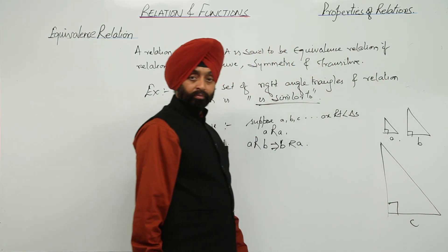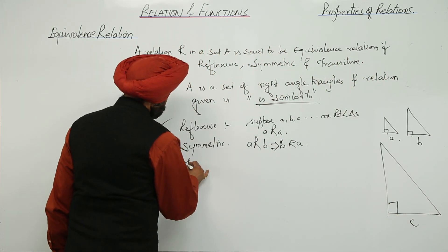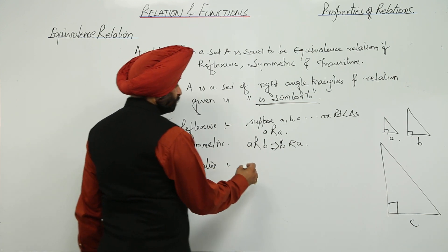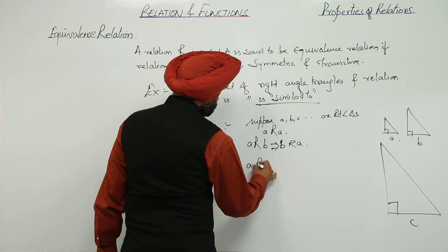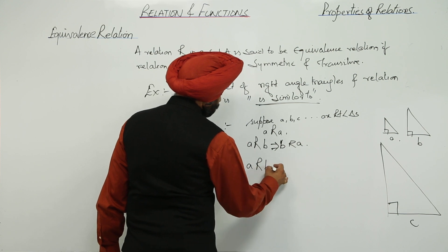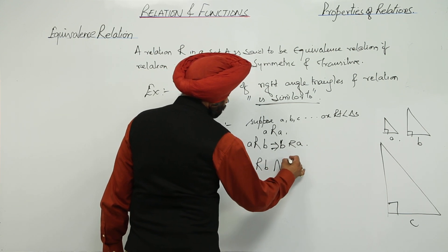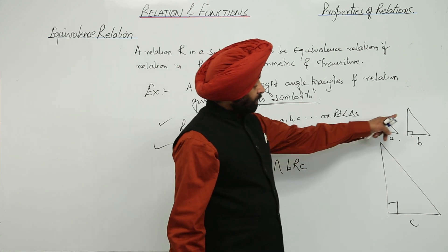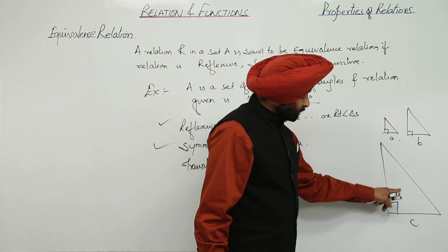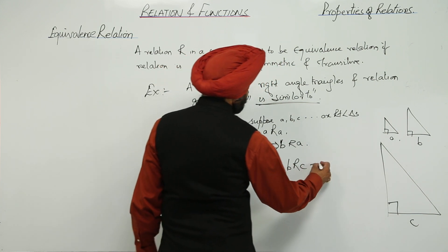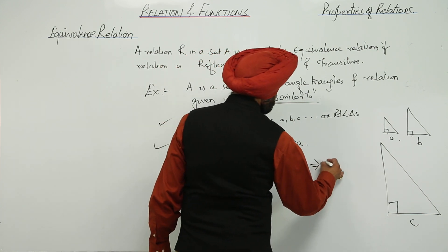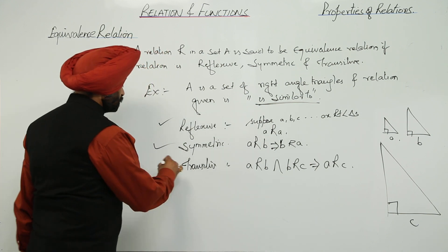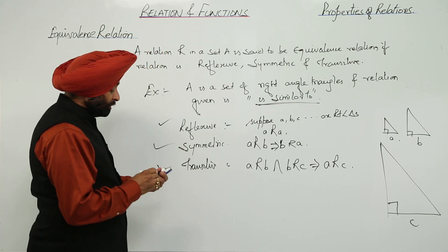Now third, we are having a bigger triangle, but again it is a right angle triangle — suppose this is C. Now transitive: A is similar to B, and B is similar to C. This implies A is similar to C. So this is also true.